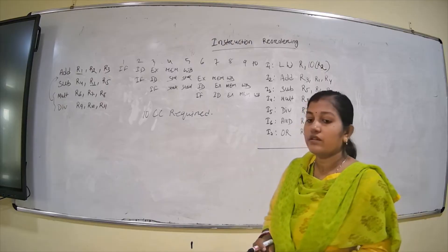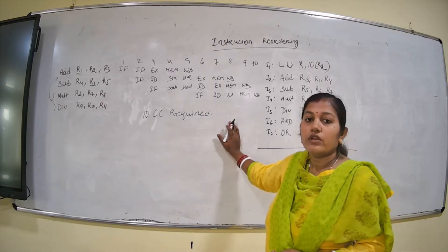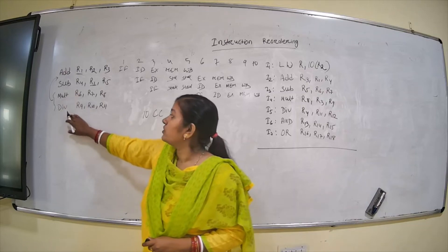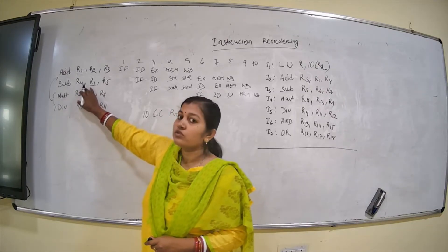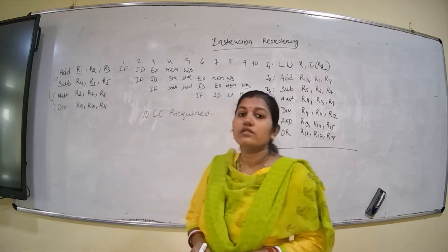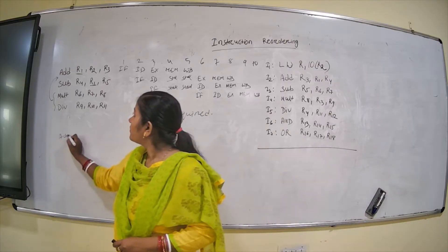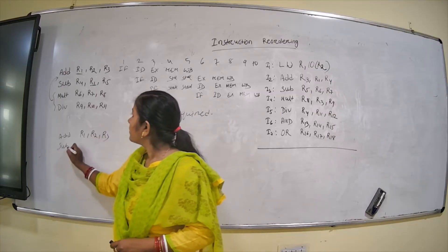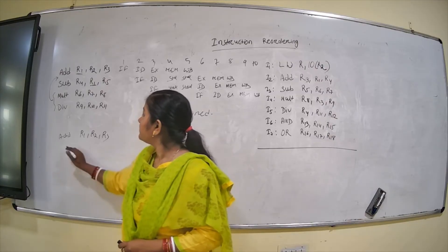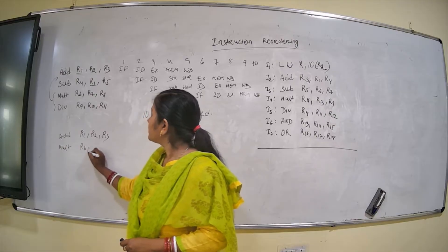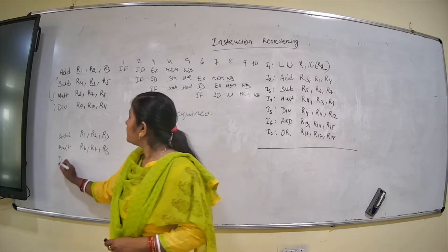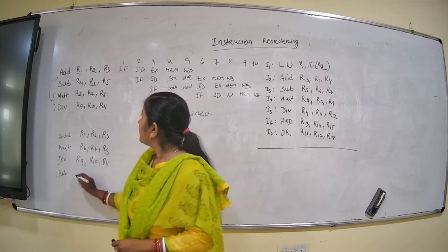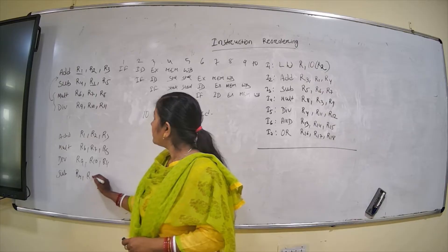10 clock cycles are required. Now, how will this be improved by using instruction reordering? We put the multiply and division instructions, which are two independent instructions, in between the dependent ones. The reordered sequence becomes: R1←R2+R3, then multiply R6, R7, R8, then division R9, R8, R11, then subtract R4, R1, R5.